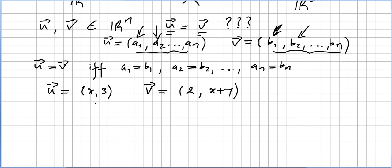Now, if we know that vector u is equal to vector v and we know that vector u is (x, 3) and vector v is (2, x+7), we have to find x and y in order to show that the two vectors are equal. So x has to be equal to 2 and 3 has to be equal to x plus y.